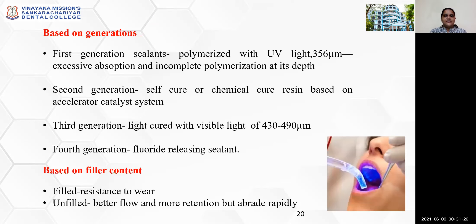Based on the generation: first generation sealants are polymerized with UV light of 365 nanometers, which causes excessive absorption and incomplete polymerization at depth. The second generation uses self-cure or chemical cure resin based on an accelerator-catalyst system. The third generation is light-cured with visible light of 430 to 490 nanometers. The fourth generation comprises the fluoride-releasing sealants.